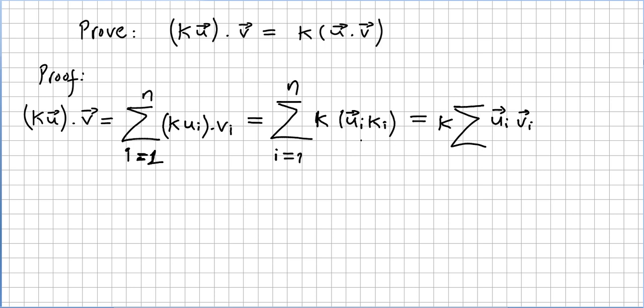And oh, sorry, there's a mistake here, right? This should be, so kui times vi equals k kui times vi equals k times ui vi.